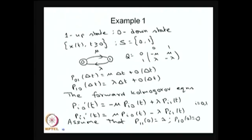The system going from state 1 to 0 — the time spent in state 1 before moving into state 0 — is exponentially distributed with parameter lambda. Once it has failed, meaning the system is in the down state, the repair time is exponentially distributed with parameter mu. Once the repair is over, the system returns to the operational state. So 1/mu is the mean time for repair and 1/lambda is the mean time to failure.